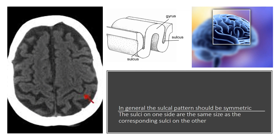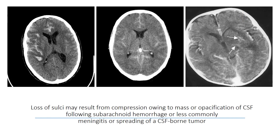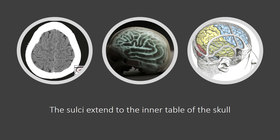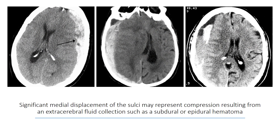The sulci on one side are the same size as the corresponding sulci on the other. The anterior inter-hemispheric fissure should be visualized. Loss of sulci may result from compression owing to mass, or opacification of CSF following subarachnoid hemorrhage, or less commonly meningitis or spreading of a CSF-borne tumor. The sulci extend to the inner table of the skull. In older patients, some atrophy is normal. Significant medial displacement of the sulci may represent compression resulting from an extracerebral fluid collection, such as a subdural or epidural hematoma.